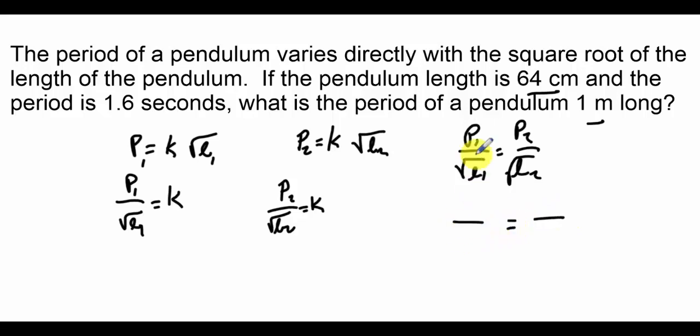In this first situation I have a length of 64, and a length of 1 meter in the second situation, or 100 centimeters. I'll just put those in the same units. Then I have a period in the first situation of 1.6 seconds and unknown in the second situation. So now it's just a case of cross product and solving.